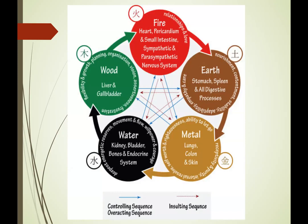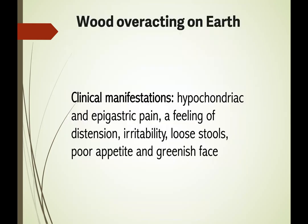In the diagram, the clockwise direction represents the controlling cycle, the double arrows indicate over-acting, and the insulting cycle goes the other way. The generating cycle shows wood generates fire, fire generates earth, earth generates metal, metal generates water, and water generates wood. The controlling cycle shows wood controls earth, metal controls wood, earth controls water, and fire controls metal.